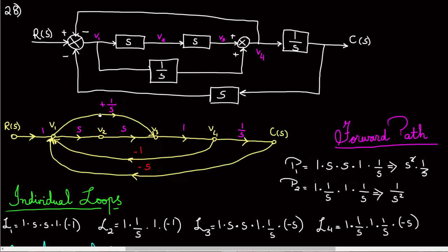Once you have your flow diagram made, you can start writing equations. For the first forward path, labeled P1, you go straight from R(s) to C(s) and multiply all the branch gains along that path: 1, S, S, 1, and 1/S.